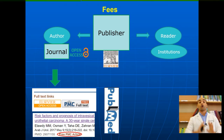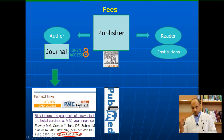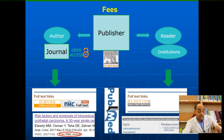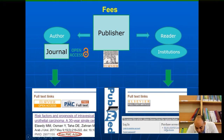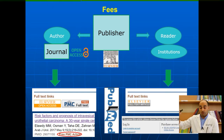Open access means the full text article is available on any research engine. On PubMed you will see the PubMed Central icon for open access articles. However, if the institution or reader pays, you will find only the abstract on PubMed, and clicking the full text link takes you to the journal website asking for a subscription — for example, one article costs $35.95. Large institutions usually have subscriptions.